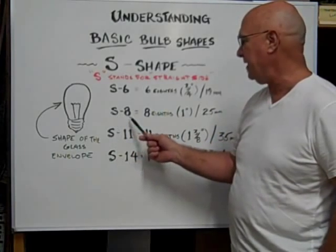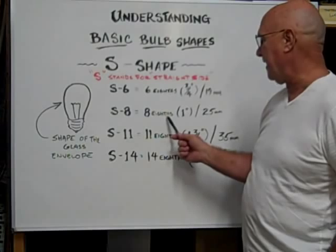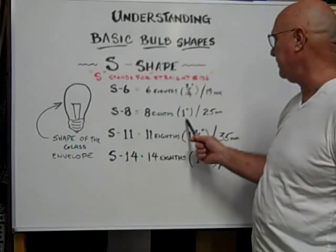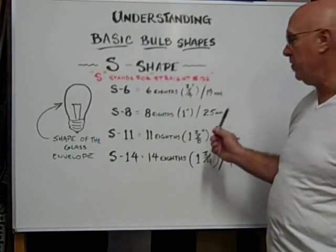An S-8 is 8 eighths, one inch in diameter, equivalent to 25 millimeters.